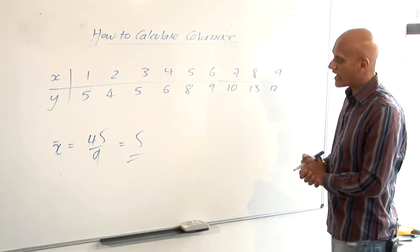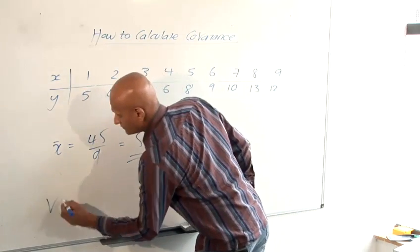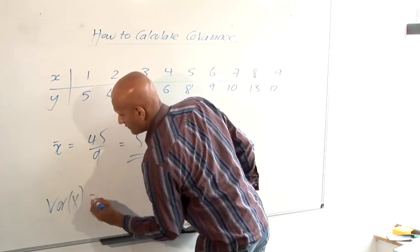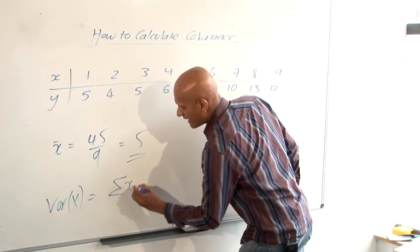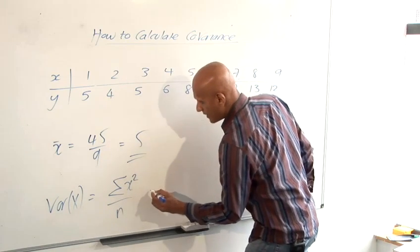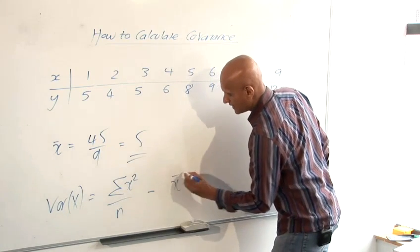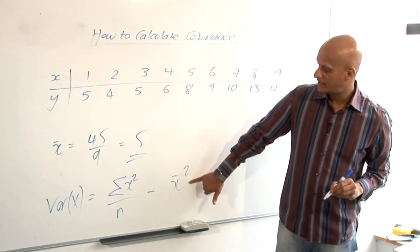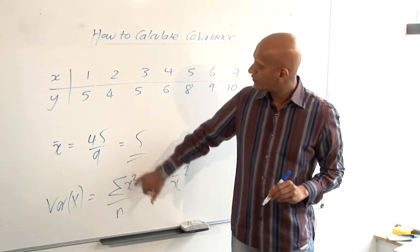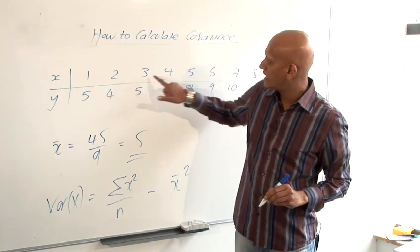Next thing we're going to do is find the variance of X. Now the variance of X is sigma X squared over N minus the mean squared. Well the mean we've just worked out is 5.